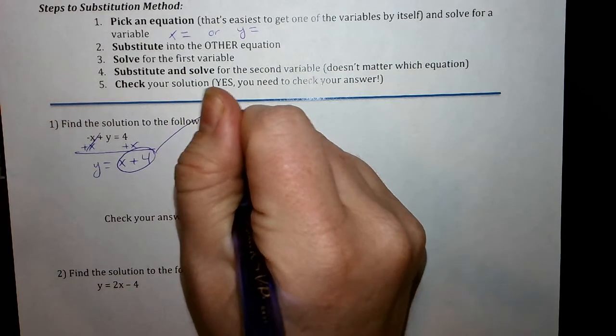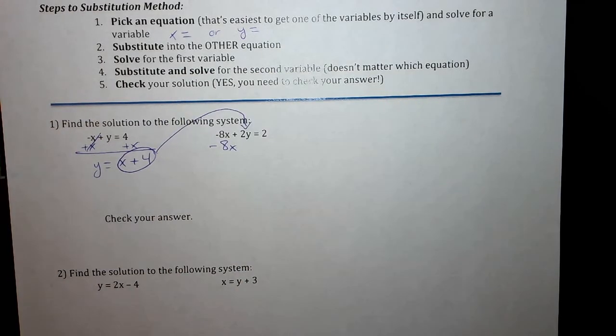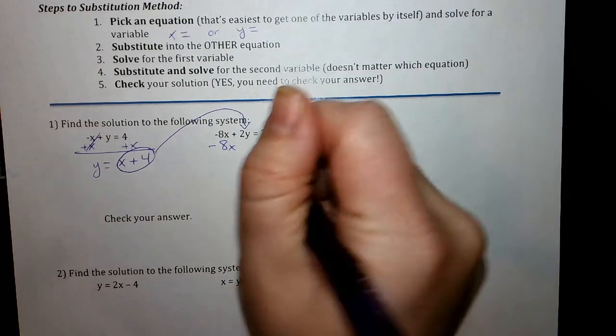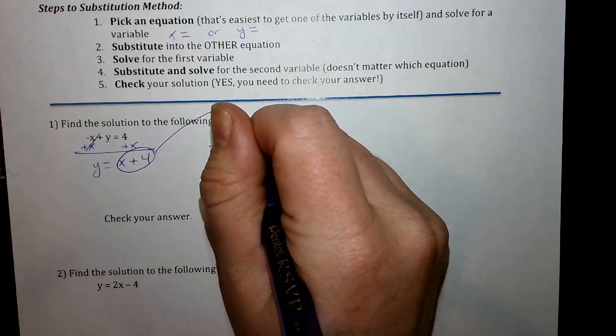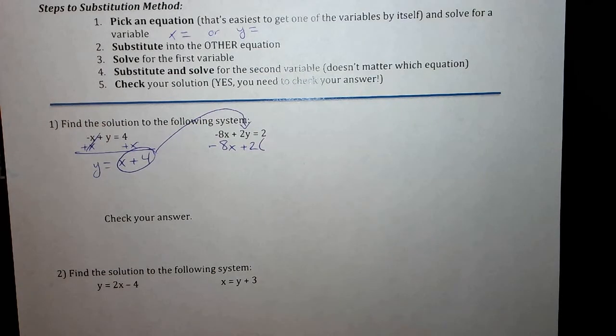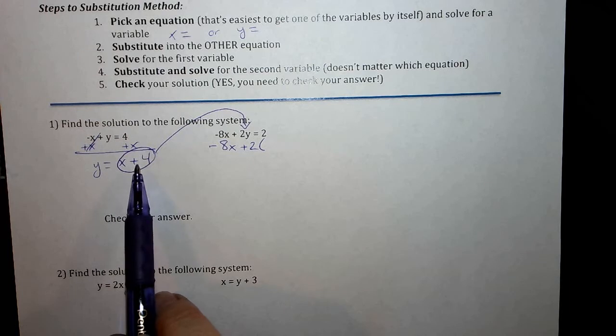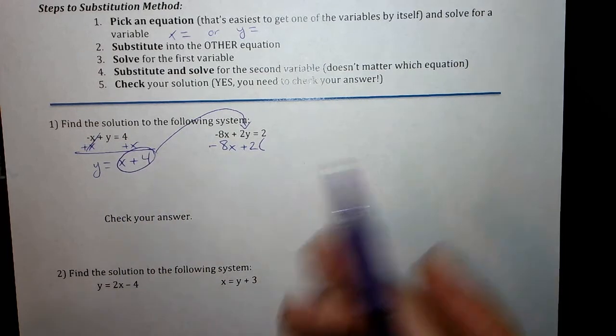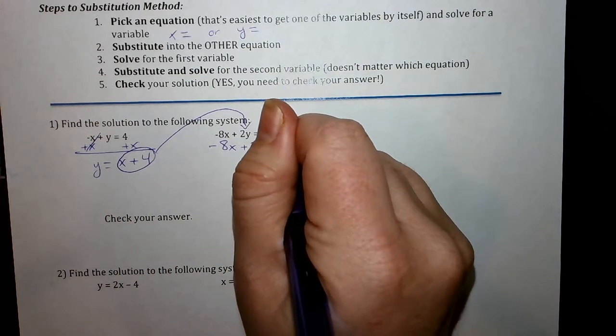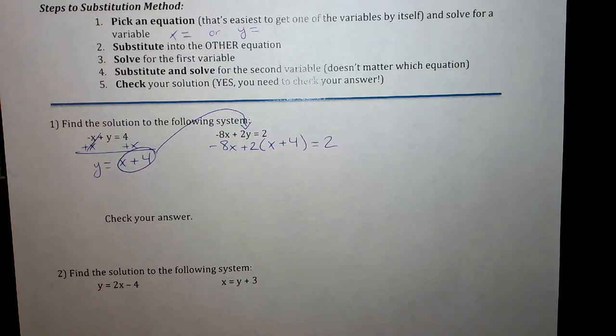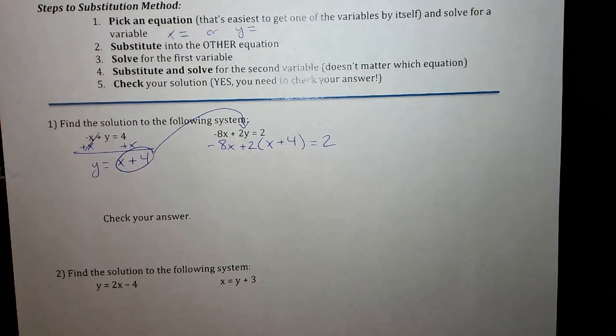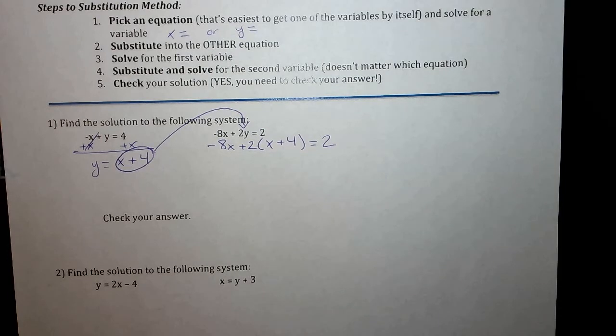So I'm still going to have negative 8x because I'm not going to do anything with that x. Plus 2 and then in parentheses, because the 2 has to be multiplied by y and since we have more than one term here plugging in, I have to use parentheses. So I have x plus 4 equals 2. So step 2, done. I substituted into the other equation.